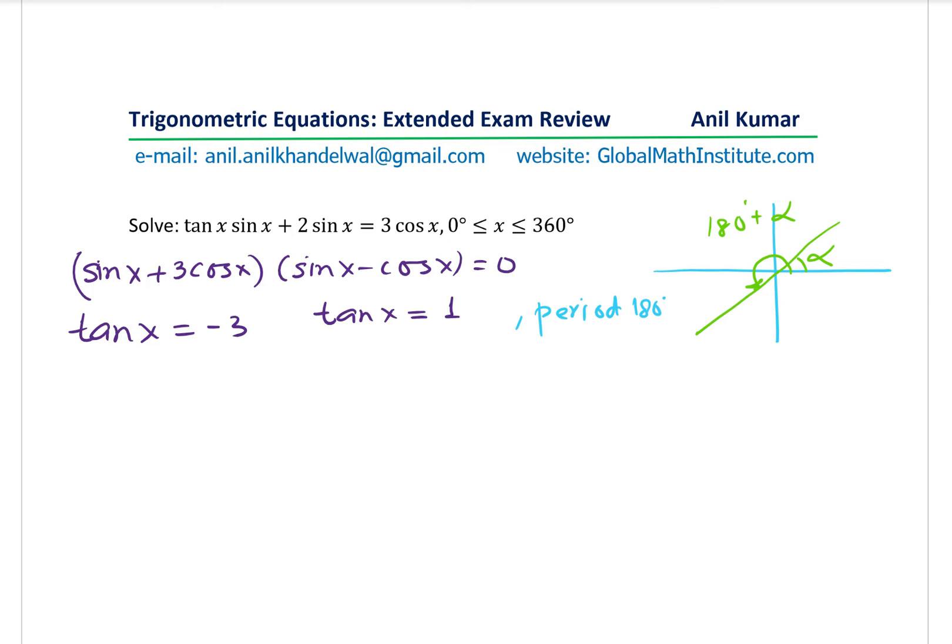So let's find the solution now. For tan x equals to 1, we know x will be equals to tan inverse of 1, which will give you two solutions in the given domain. Remember, the domain is 0 to 360 degrees. And in this domain, 45 degrees and 135 degrees. So we get x is equal to 45 degrees and 45 degrees plus 180 degrees, which is 225 degrees. So those are the two solutions for that equation.